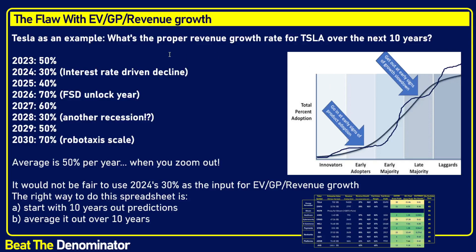Let me show you how I think I'm going to fix it with this example. Let's use Tesla. What is the proper forward revenue growth rate for Tesla over the next 10 years? I've always said it's 50%. If you look at analysts, 2023 was roughly a consensus 50% year — very straightforward from 1.3 million to 1.8 million cars. But in 2024, a lot of people are saying it's going to be only 30%, mostly driven by interest-rate-driven decline in sales, because interest rates increased so suddenly there are fewer people who can afford cars. So it may look like product adoption is finished for Tesla.